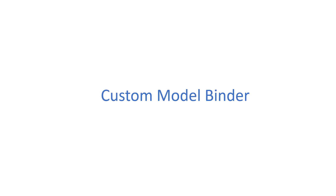Although the ASP.NET Core Web API framework provides all the built-in model binders to bind your incoming data with .NET types, we might still have scenarios where we need to manipulate the incoming data before actually binding it to a .NET type. In that scenario, we can create our custom model binder and use it directly in an ASP.NET Core Web API application.